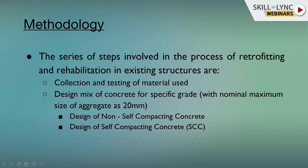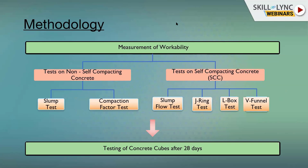When a client requests renovation of an existing residential structure without proper existing data, the process starts with a preliminary assessment followed by a site visit. During the site visit, visual inspection and material inspection are conducted. If data is unavailable, samples of soil, concrete, and steel are collected and tested. Knowledge of concrete tests — slump test, compaction factor test, and workability tests for self-compacting concrete — is essential for every civil engineer.